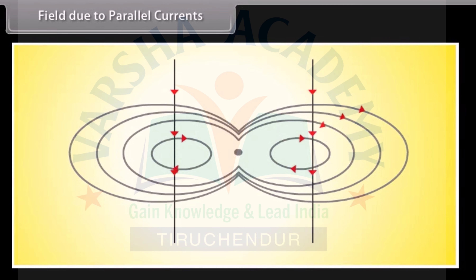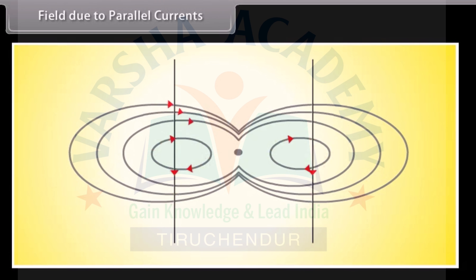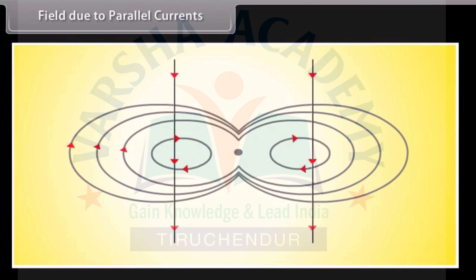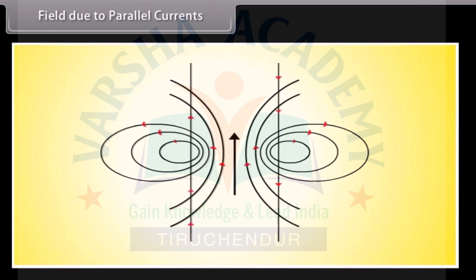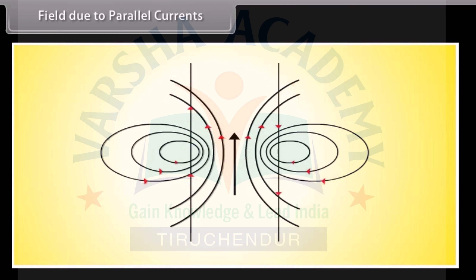The combined magnetic field due to two parallel conductors carrying current in the same direction shows a pattern indicating attraction between the conductors. The combined magnetic field due to two parallel conductors carrying currents in opposite directions shows a pattern indicating repulsion between the conductors.